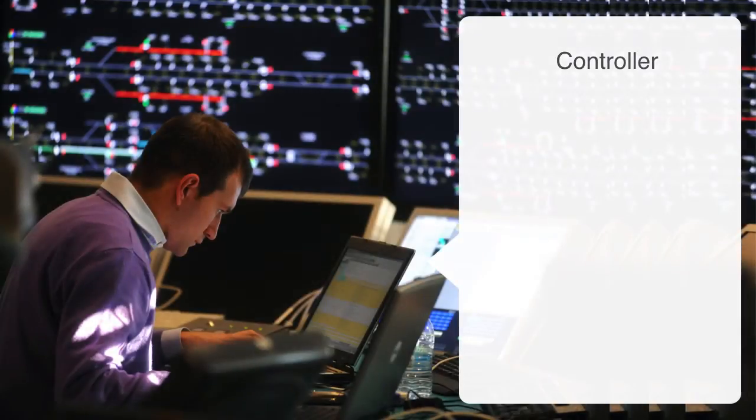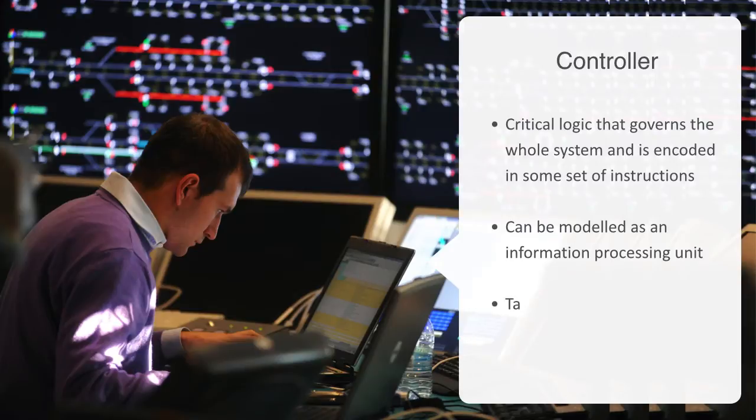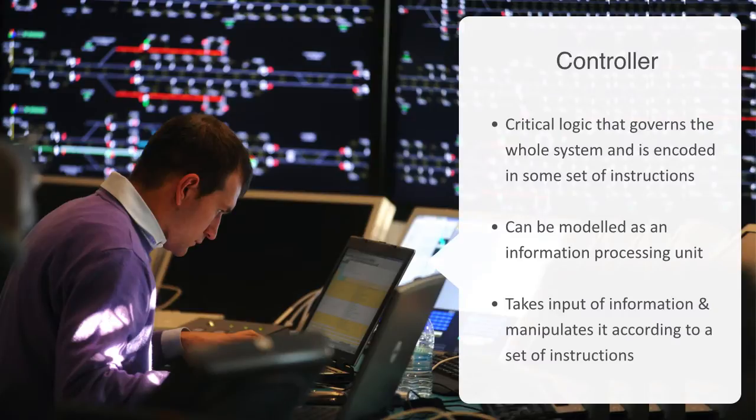Secondly, the controller. The controller is the brains of the operation. It contains the critical logic that is governing the whole system and is encoded in some set of instructions. The controller can be modeled as an information processing unit, taking in some input of information, manipulating this information according to its set of instructions, with the result being an output of information that is designed to be acted upon.